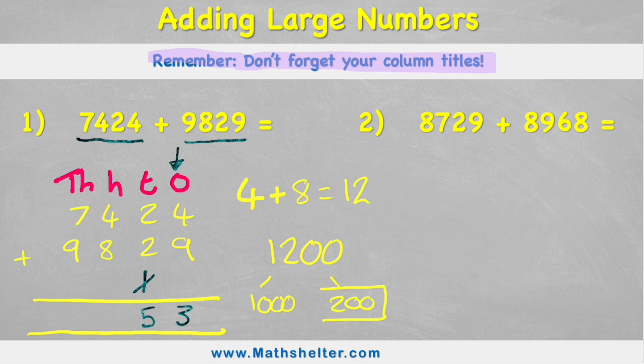But my 1,000, I'm going to move into the thousands column because I've not yet worked out my thousands. Now I'm solving my thousands and I have 7,000 plus 9,000 plus 1,000. And that equals 17,000.